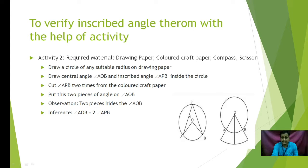After doing this, we have to measure angle APB with the help of protractor. Now, cut angle APB two times from the colored craft paper. Put these two pieces on angle AOB. You can see here, angle AOB, these two pieces we have fixed. Now what is our observation? The observation is, two pieces hide the angle AOB. What is the inference from this? The inference is, angle AOB is two times angle APB. So this activity also will help you to understand that inscribed angle is one half the intercepted arc.